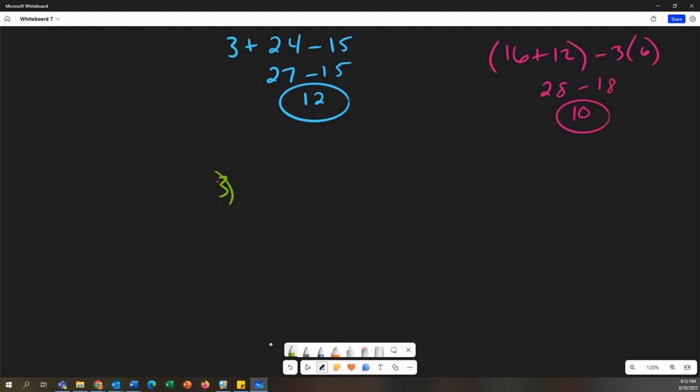All right, next one. We have 2 to the third over 4 plus 3 plus 2. All right, so what do we have first? We have P first, parentheses. 3 plus 2 is 5. I'm going to bring everything else down.